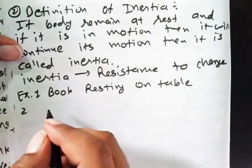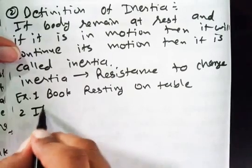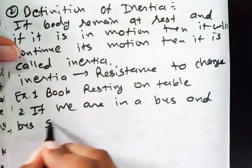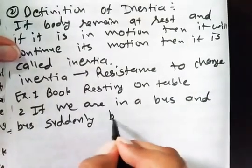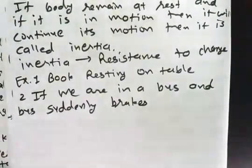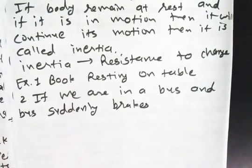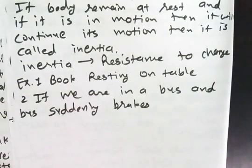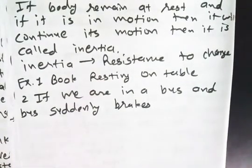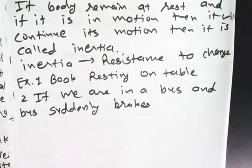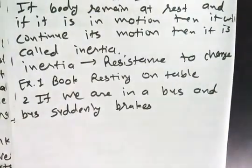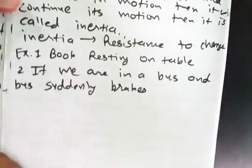Second example: if we are in a bus and the bus suddenly brakes, what happens? Our upper body moves in the forward direction because the braking force is exerted in the reverse direction. Our upper body is in inertia — resistance to change — so it moves forward. But our lower body, the legs and feet, are not moving forward because they are in direct contact with the bus.